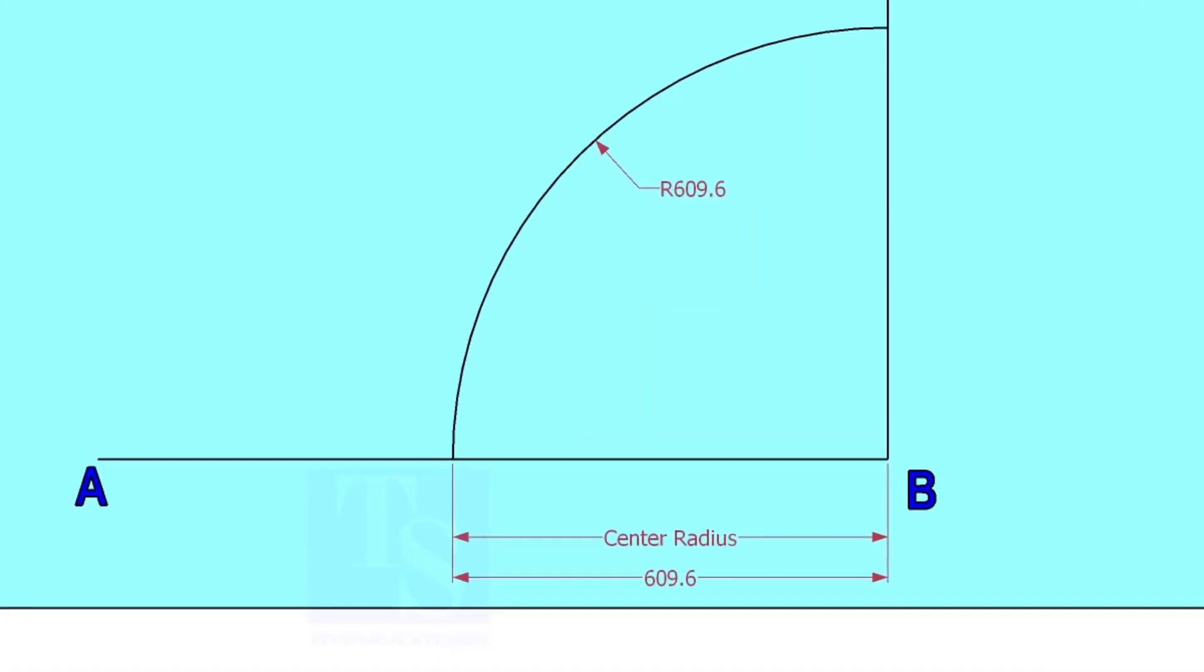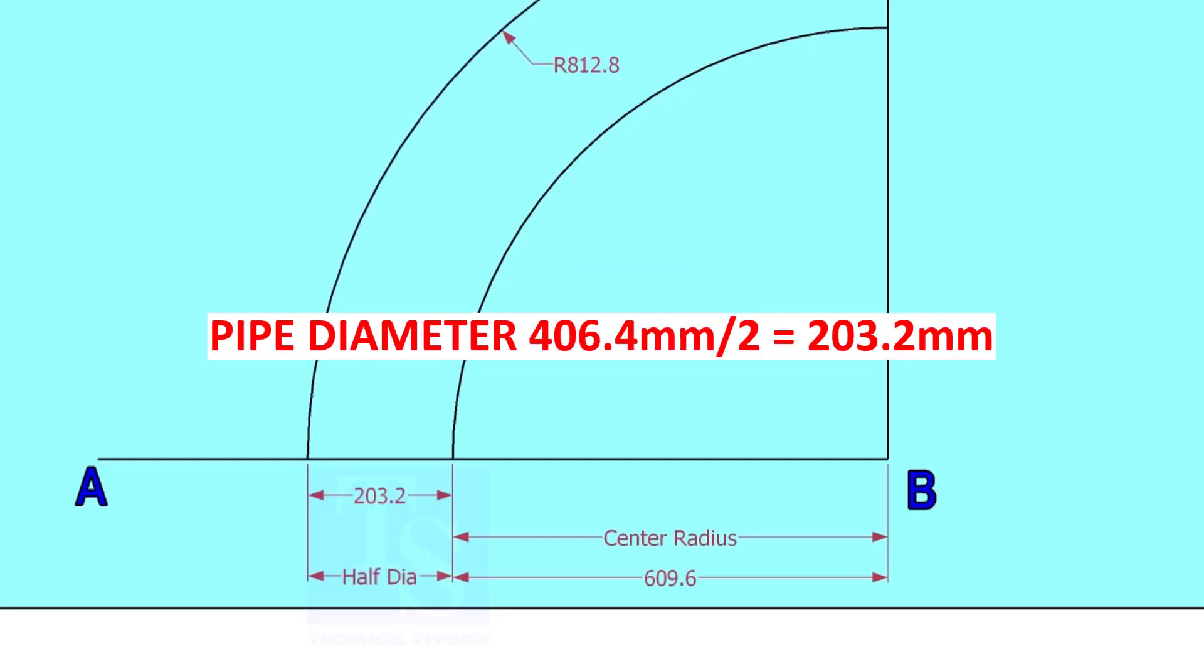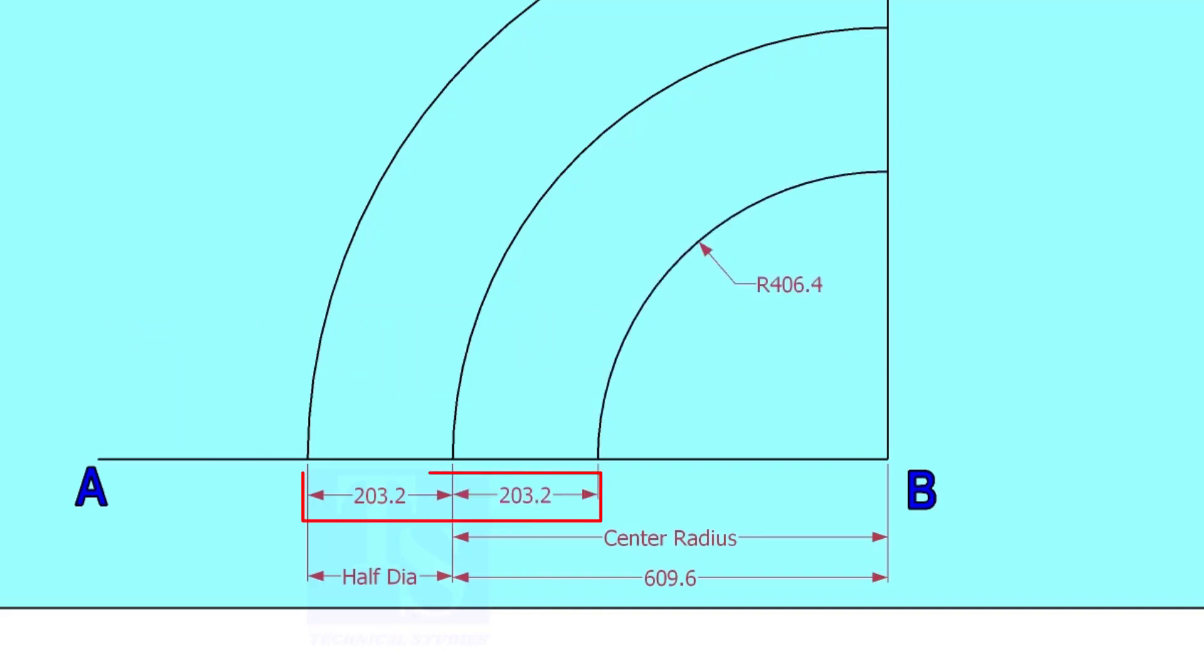Draw an arc with the center radius 609.6 millimeters. Mark the half OD arcs on both sides of the center line.